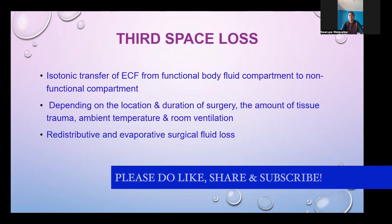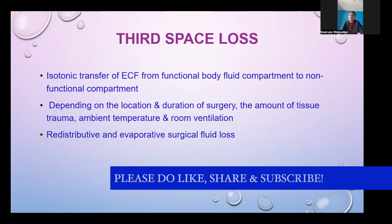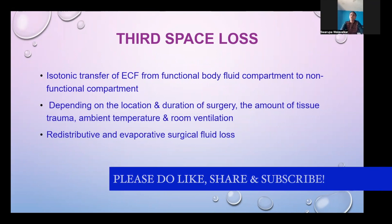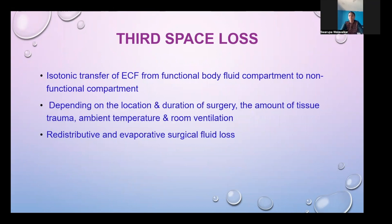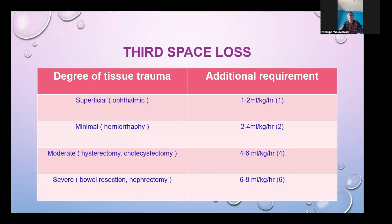Third-space loss is the isotonic transfer of extracellular fluid from functional body compartments to non-functional ones. Depending on the location and duration of surgery, degree of tissue trauma, ambient temperature, and room ventilation, it consists of distributive and evaporative surgical fluid loss. For superficial surgeries such as ophthalmic procedures it is 1 ml/kg/hour; for minimal surgeries like herniorrhaphy, 2 ml/kg/hour; for moderate surgeries, 4 ml/kg/hour; and for severe cases, 6 ml/kg/hour.